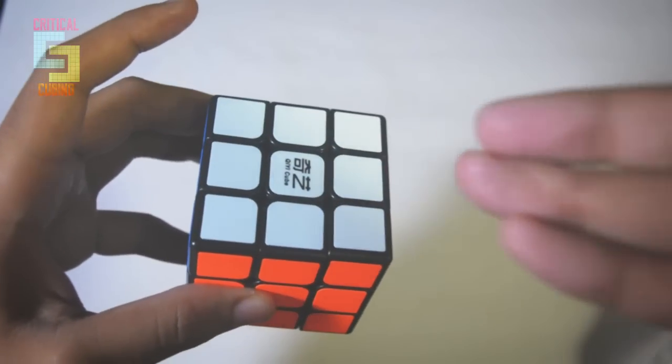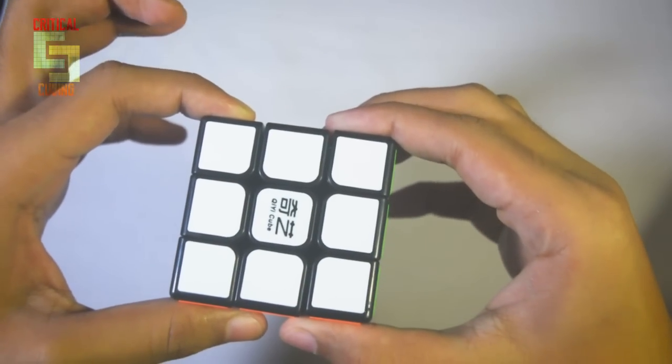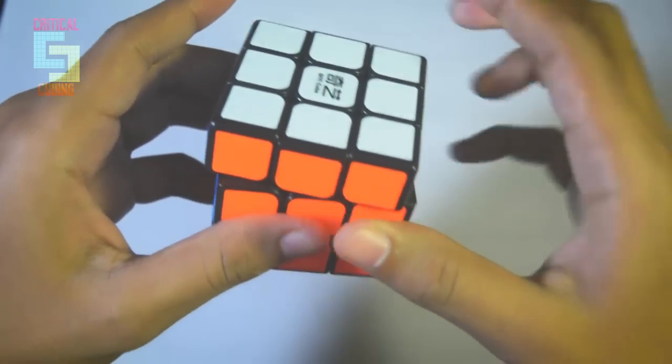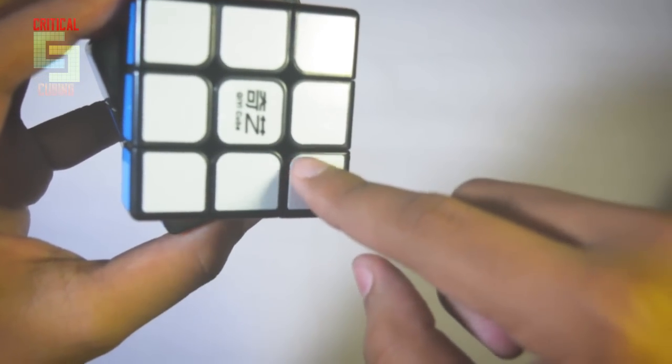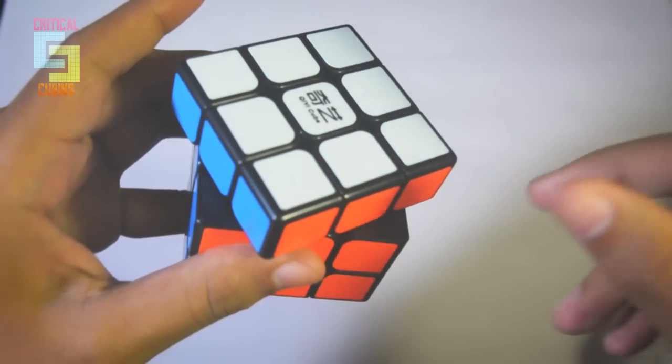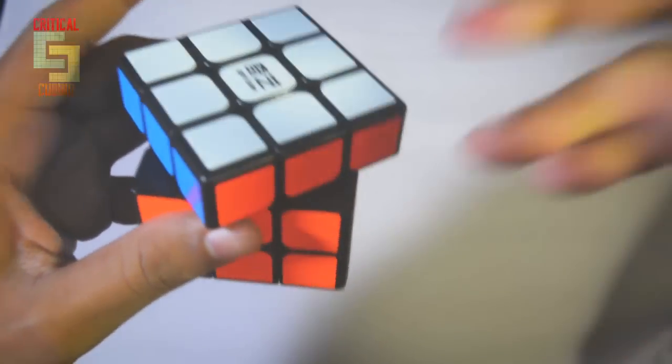So you can see, Sail has this fast feel to it, even on the tight tension. You can also do 45 degrees for normal corner cutting, and 2 3rds for reverse corner cutting. And it does have the normal corners, so it does not have the squared corner design. But on these tight tensions, it is practically impossible to actually corner twist this cube.